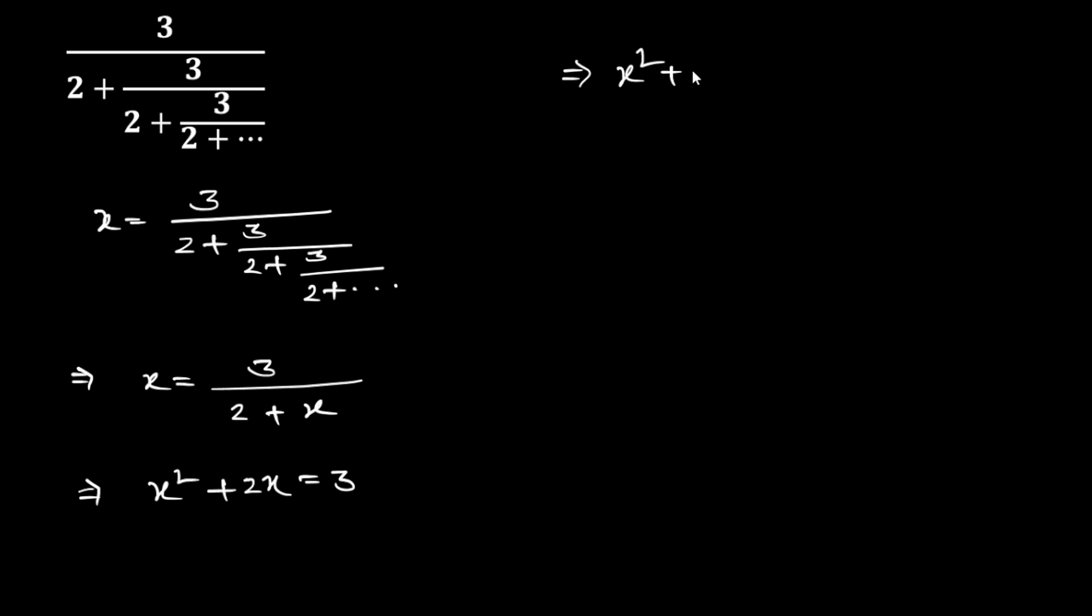Now split the middle term, so X squared plus 3X minus X minus 3 is equal to 0.